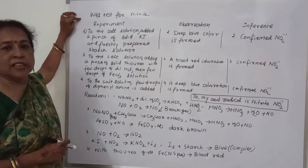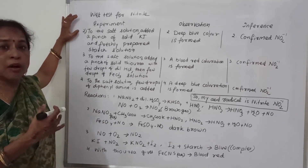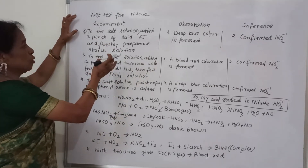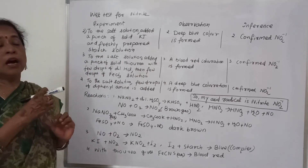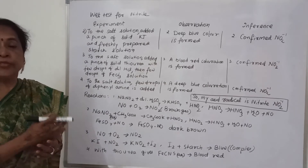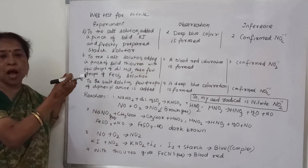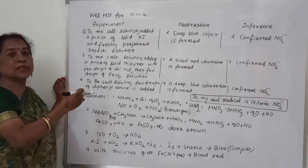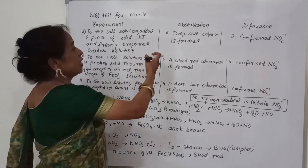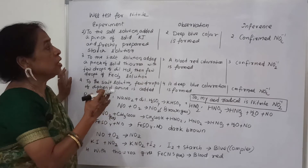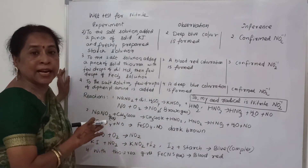Now we will see the second wet test for nitrite. To the salt solution, a pinch of solid potassium iodide is added, and then freshly prepared starch solution is added. What I observe: a deep blue color is formed. The deep blue color is due to the starch-iodide complex, and this confirms nitrite NO₂⁻.